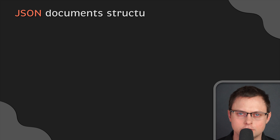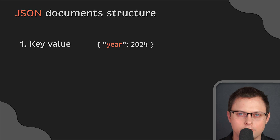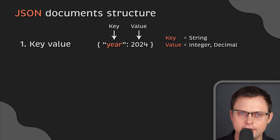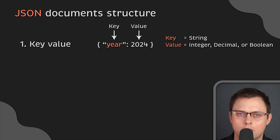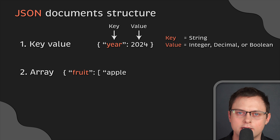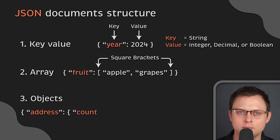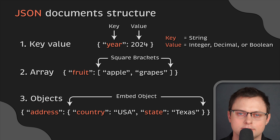JSON represents data in three ways. The first is key-value pairs, recorded within curly braces — the key is a string and the value can be any data type such as integer, decimal, or boolean; for example, year: 2024. Next is the array — an ordered collection of values defined within brackets, with items comma-separated; for example, fruit: [apple, grapes]. Finally, objects — a collection of key-value pairs. JSON documents allow developers to embed objects and create nested pairs; for example, address: { country: USA, state: Texas }.